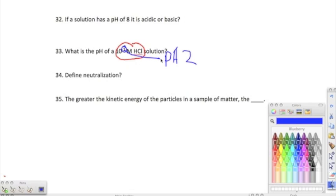And then 35, it says the greater the kinetic energy of the particles in a sample of matter, the greater the temperature is. Remember, kinetic energy means movement. The more something moves, the higher temperature it's going to be.